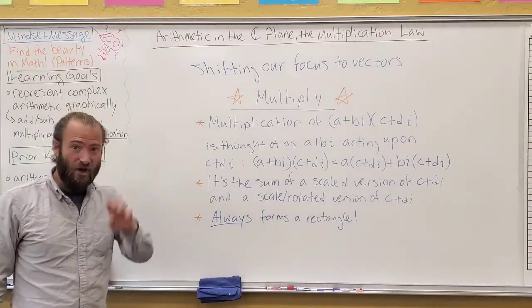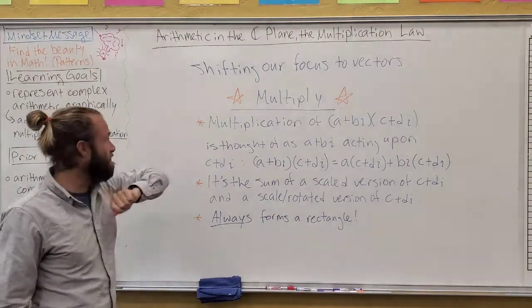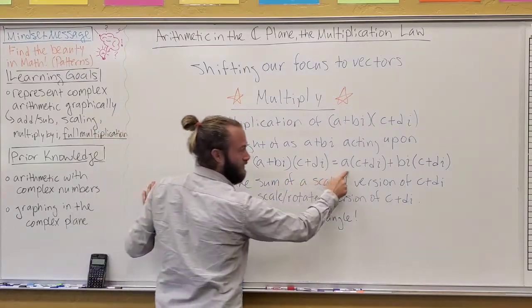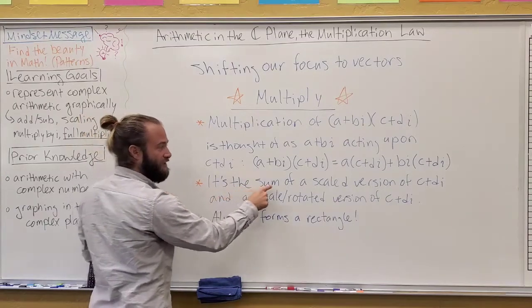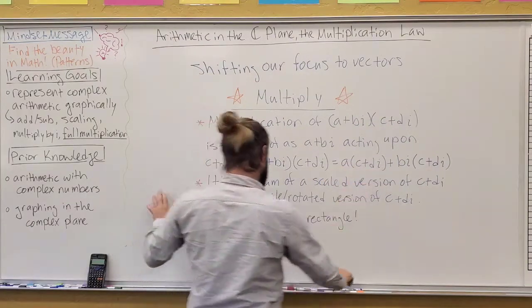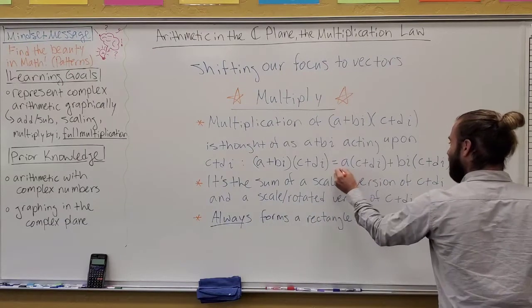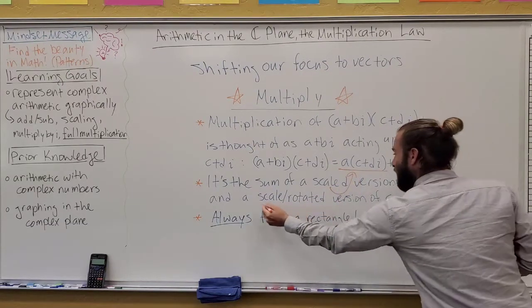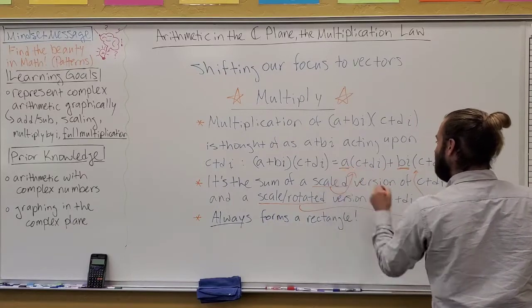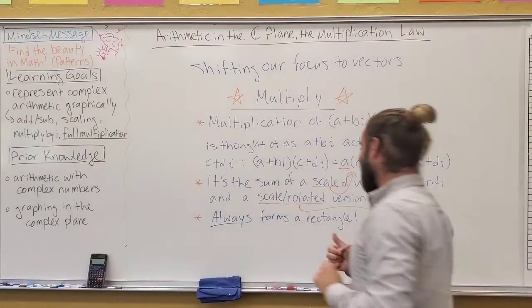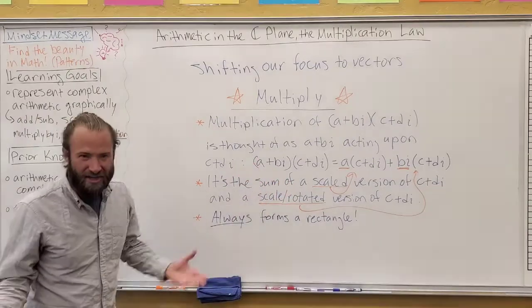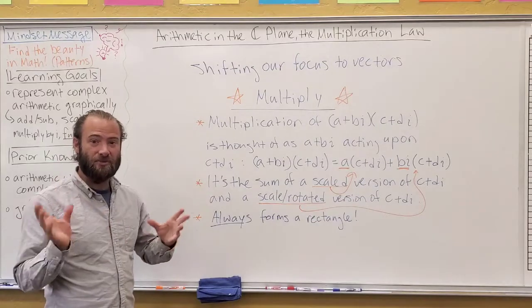But we can add to that list. So, here's like the fourth column you can add to our list back when we said shifting our focus to vectors. Multiplication is thought of as a plus bi acting upon c plus di. And we distributed like that. It's essentially always thought of as the sum of a scaled version of c plus di, right? So, here's a scaled version of him. And a scaled and rotated version of him, right? So, here's just the scaled version. And then the scaled and rotated version is because of this bi. And another fact is it always forms a rectangle. And that's pretty cool. That means now we have a full entire repertoire, I guess you could say, of visuals for operations with complex numbers.